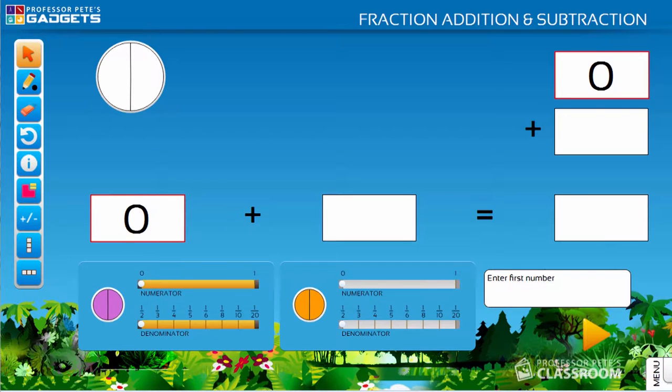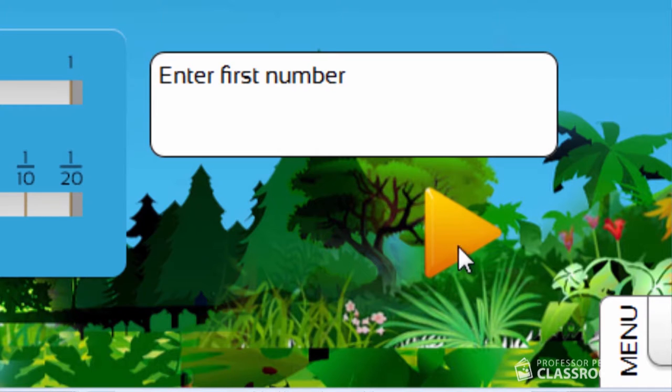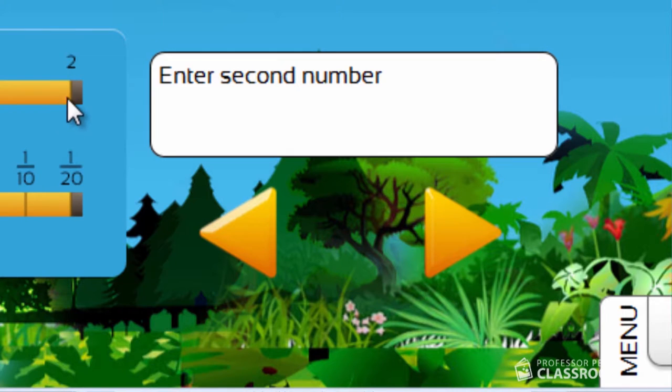This program walks the user through the algorithm. What is possible on screen is constrained by following the steps in a fairly ordered way. The progress arrow and instruction box helps prompt the user through the steps.